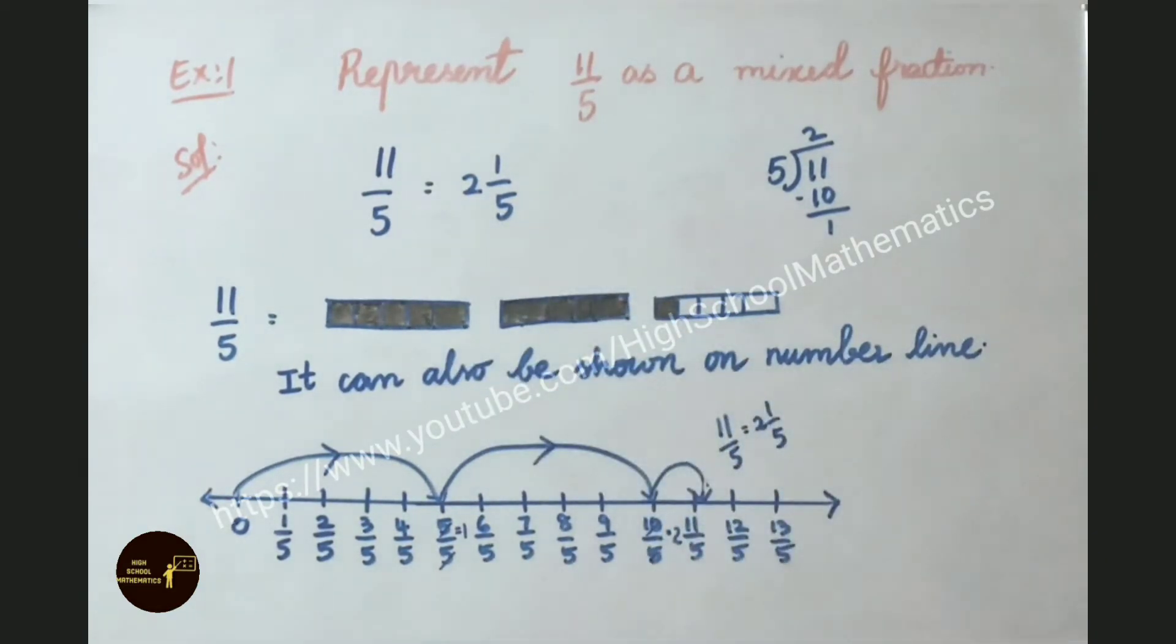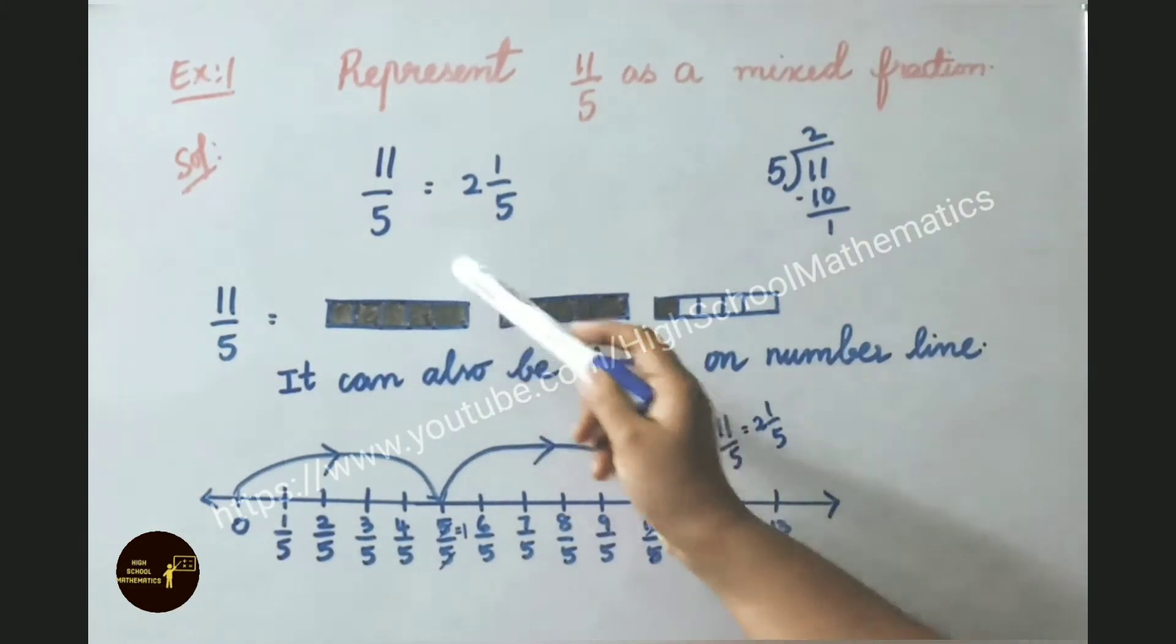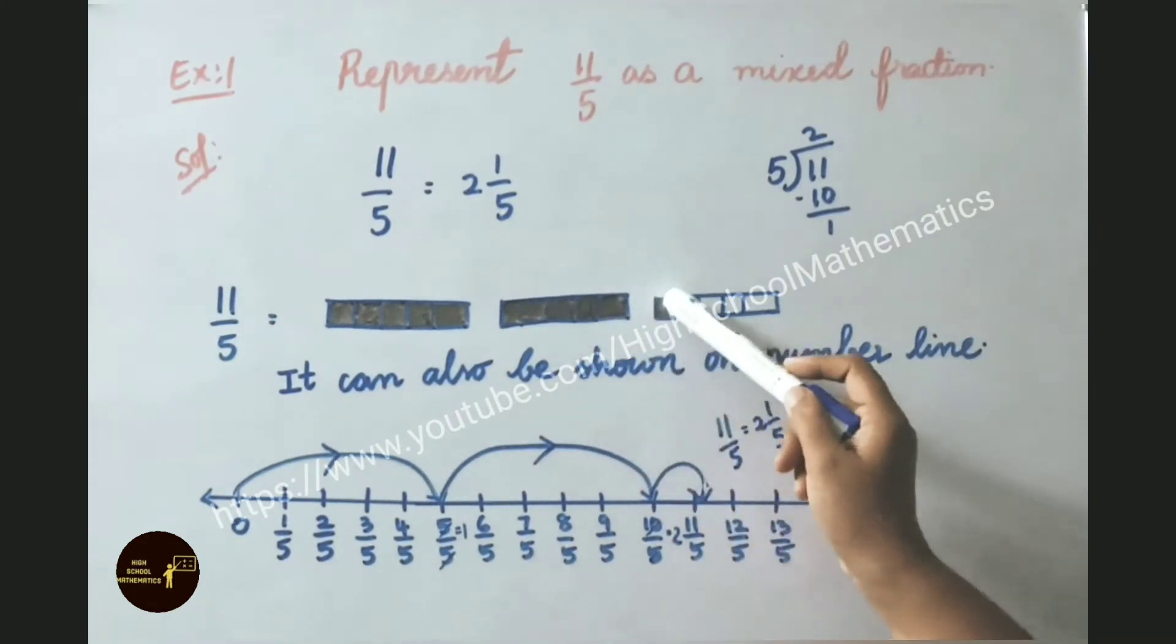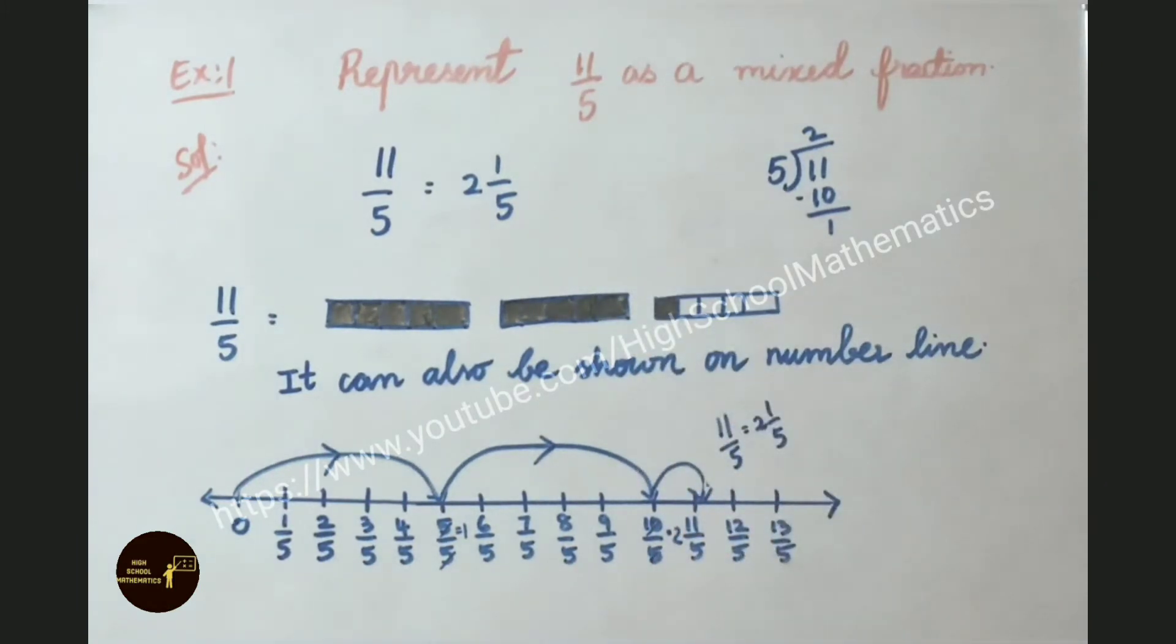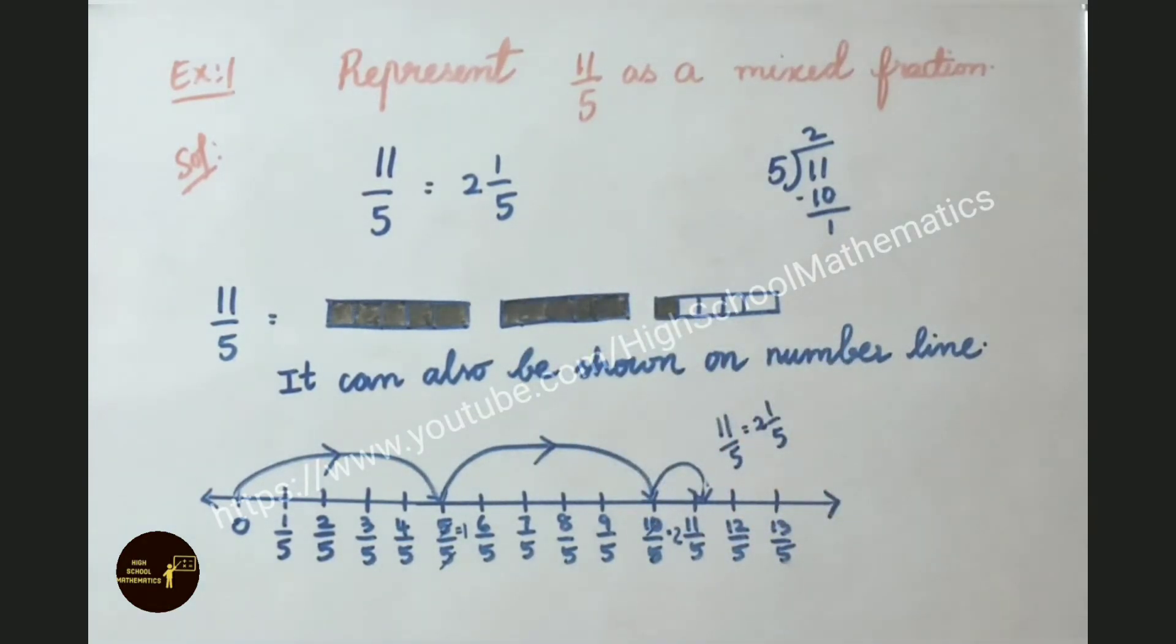11 by 5 can also be represented pictorially in this way. Here each box we have taken 5 parts and all 5 are shaded. Second also same way, 5 parts it is divided and it is also shaded. So 2 complete parts we are having. Now in third one only one part we have shaded. So 2 and 1 by 5 we represented in this way.